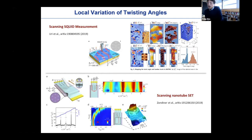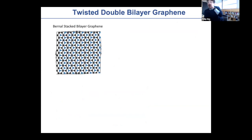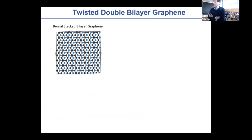One way to get around this is: is there a way to bring the magic flat band not just by controlling the angle, but by controlling some other parameter in the system? This brings the idea of the twisted double bilayer. Around similar times, a few groups tried out this idea. The concept is as follows: if you think about a Bernal stacked bilayer — two graphene layers stacked in registry — there is an inversion symmetry between the lattice points.